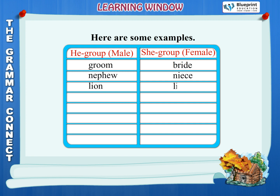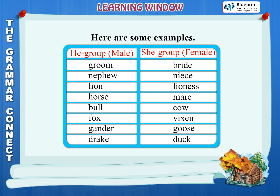Lion, lioness. Horse, mare. Bull, cow. Fox, vixen. Gander, goose. Drake, duck.